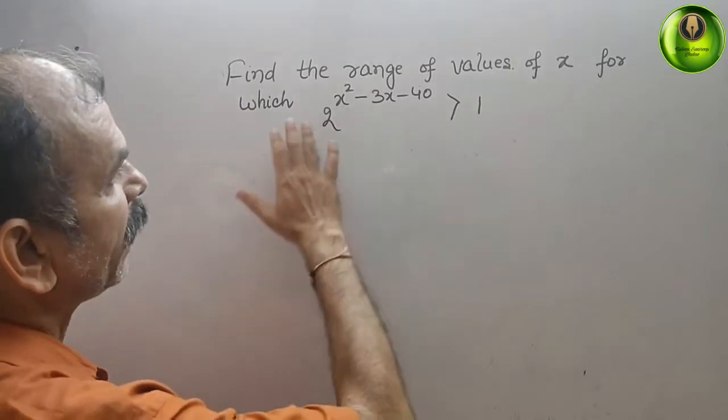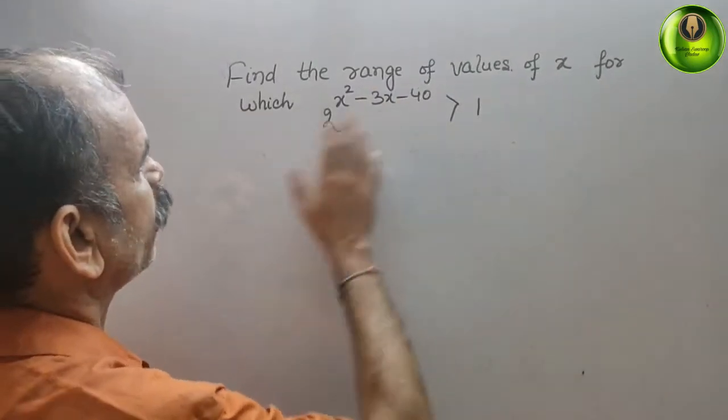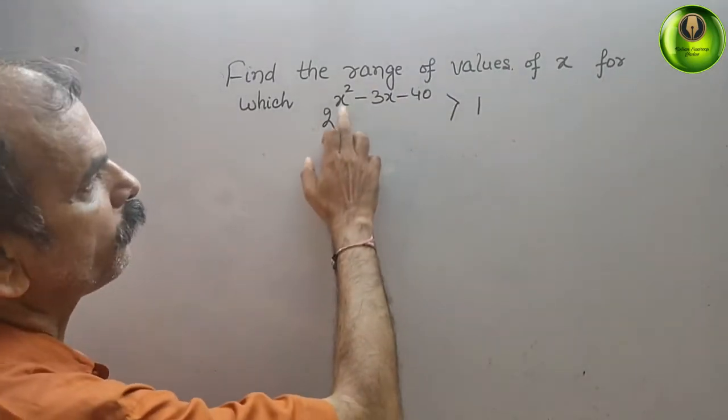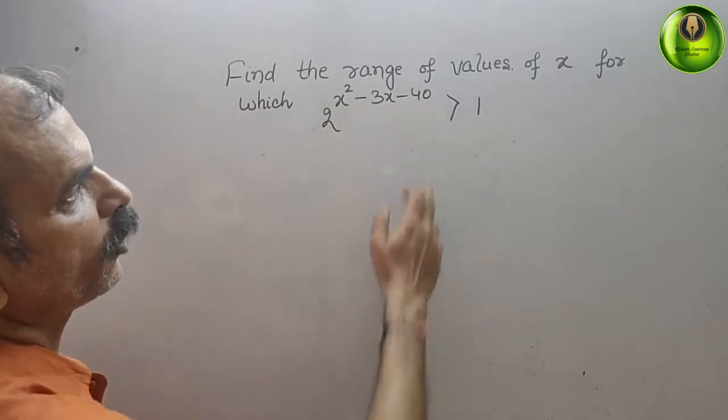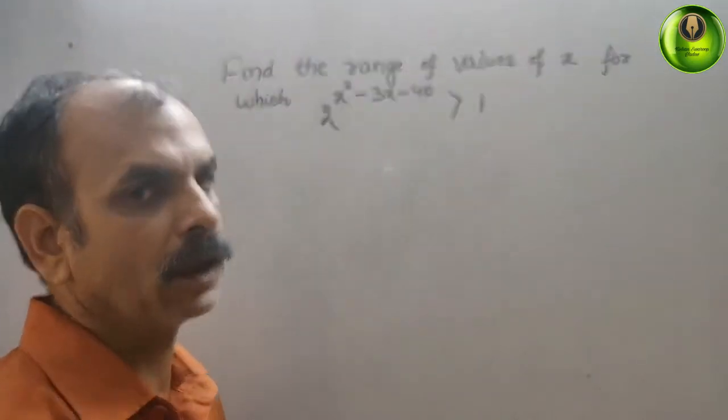Your question is, find the range of the value of x for which 2 to the power of x square minus 3x minus 40 is greater than 1.